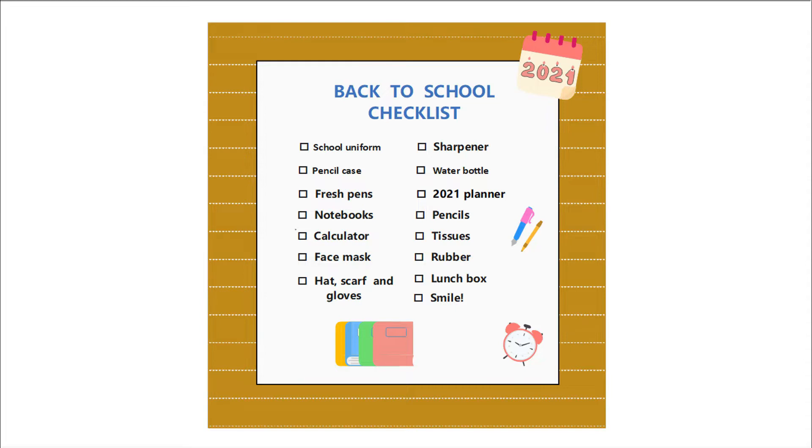This checklist diagram illustrates a back-to-school checklist which includes school uniform, pencil case, fresh pens, notebooks, calculator, face mask, sharpener, water bottle, 2021 planner, pencils, tissues, rubber eraser, lunchbox, hat, and others.